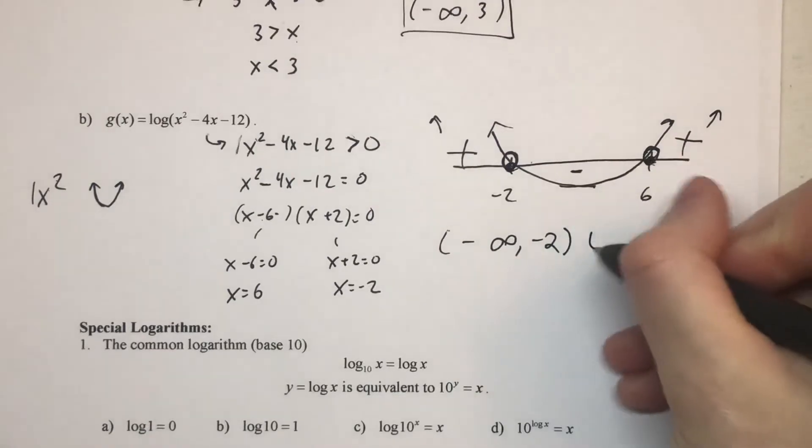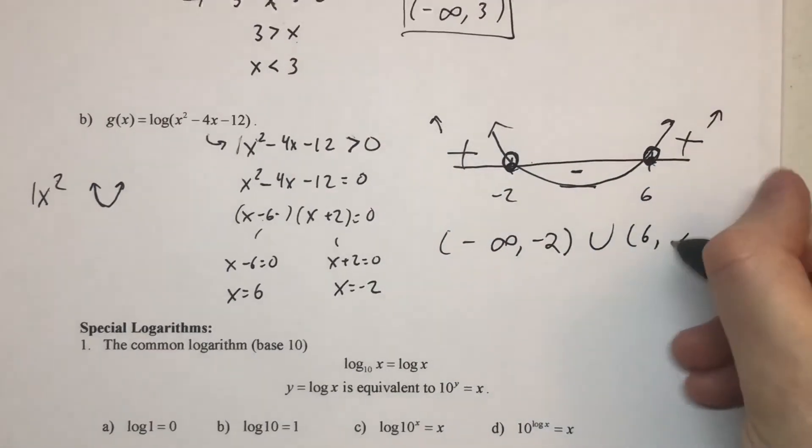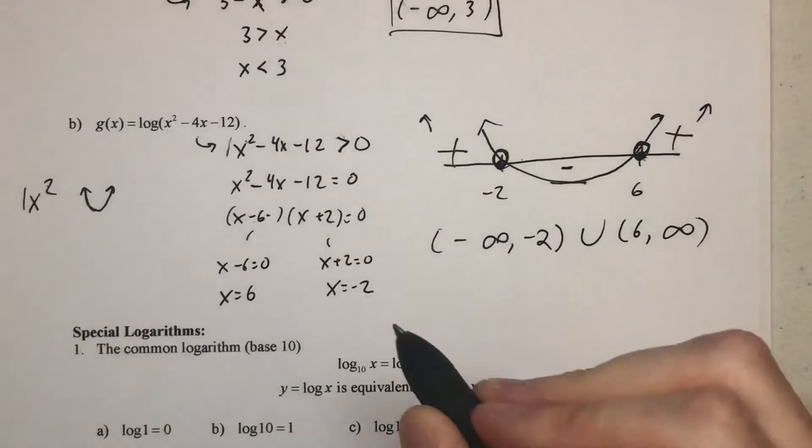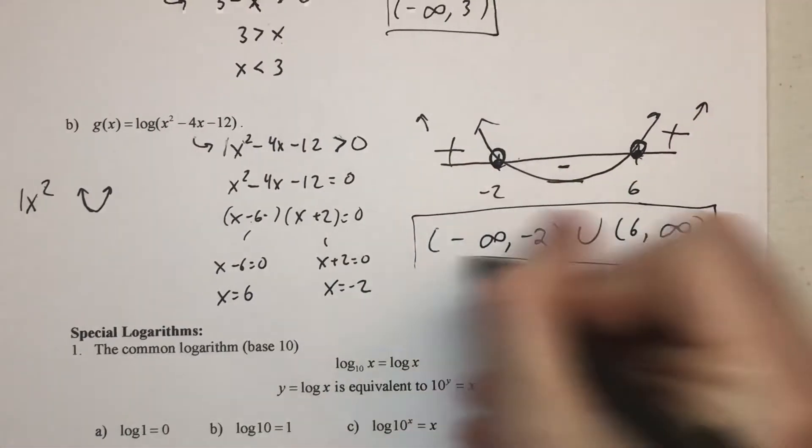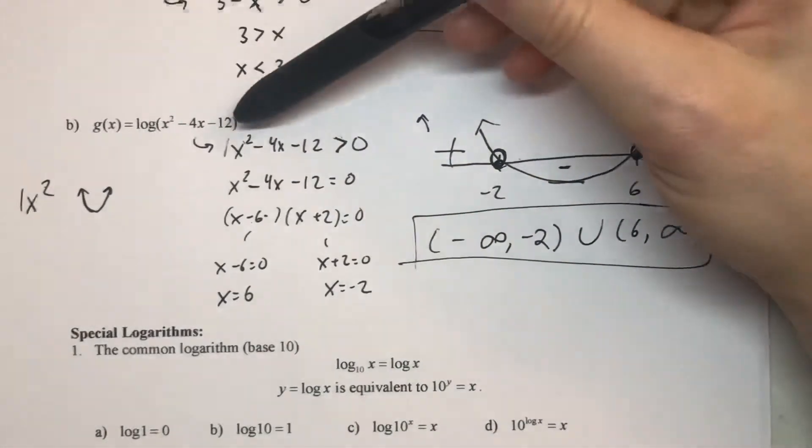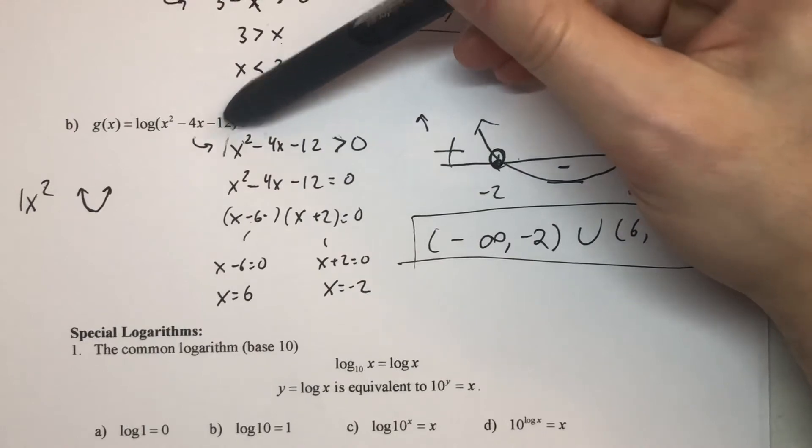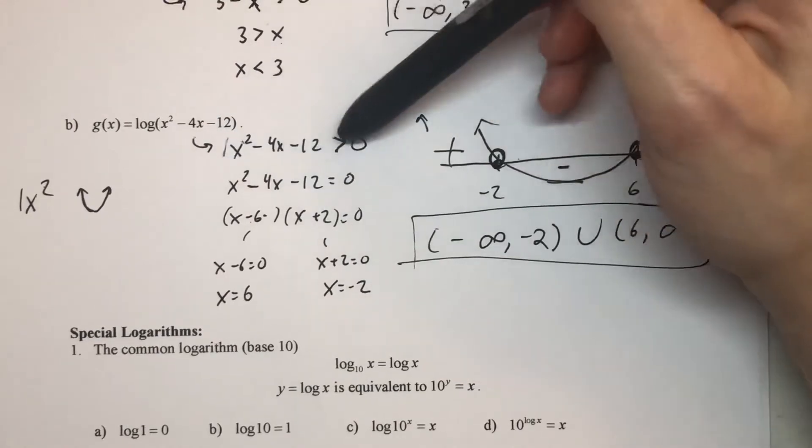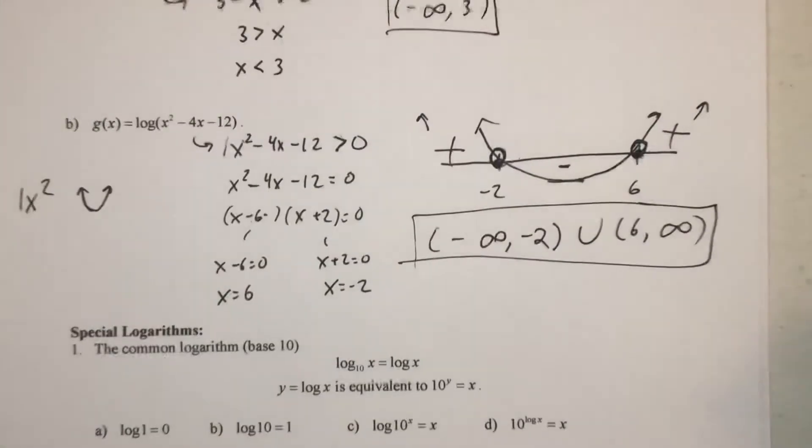Hop over to the other side of six and all the x's to the right of six. And so that is how we find the domain of this logarithm by creating that polynomial inequality and then going through our process from section 3-6.